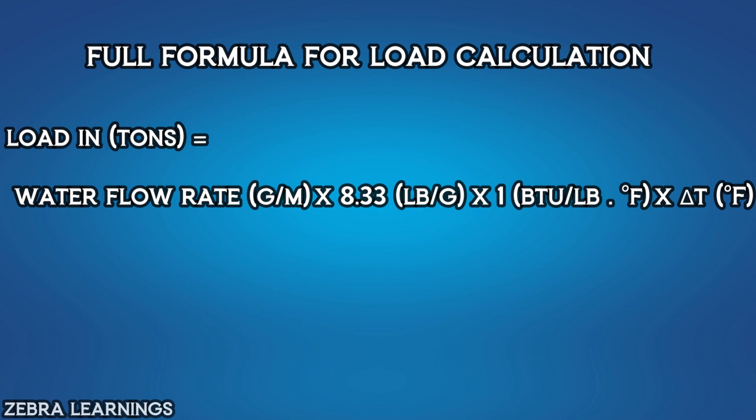Now the gallon units in the flow rate and the gallon units in the water density cancel out. Then the pound units in the water density and the pound units in the water's specific heat capacity cancel out. And then the degree Fahrenheit units in the specific heat capacity of water and the degree Fahrenheit units in delta T cancel out.